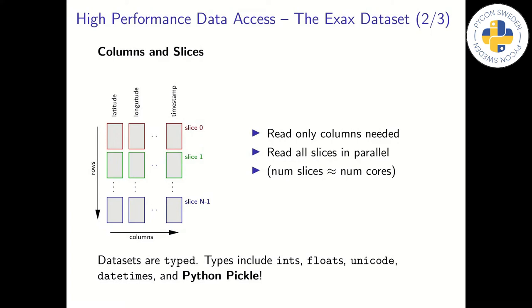For parallel processing reasons, datasets store data in disjoint slices. Typically, we use one slice per CPU core on the machine. As we will see shortly, this is an efficient way to make use of the full potential of a computer's CPUs.